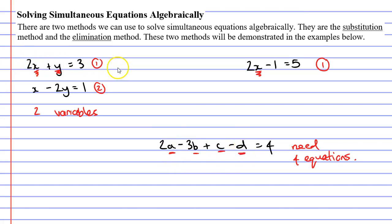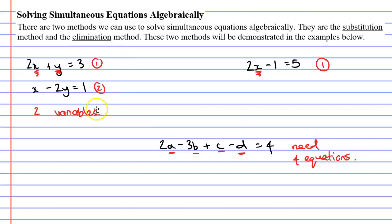Now what we're going to do in the next couple of videos is we're going to solve two equations simultaneously, which means we will only have two variables, and there are two methods that we can use. There is the substitution method, which we'll do in example 1, and there is the elimination method, which we will do in example 2. That concludes this video introducing the concept of solving simultaneous equations algebraically. Remember to read the description below for links to work booklets that relate to this video.